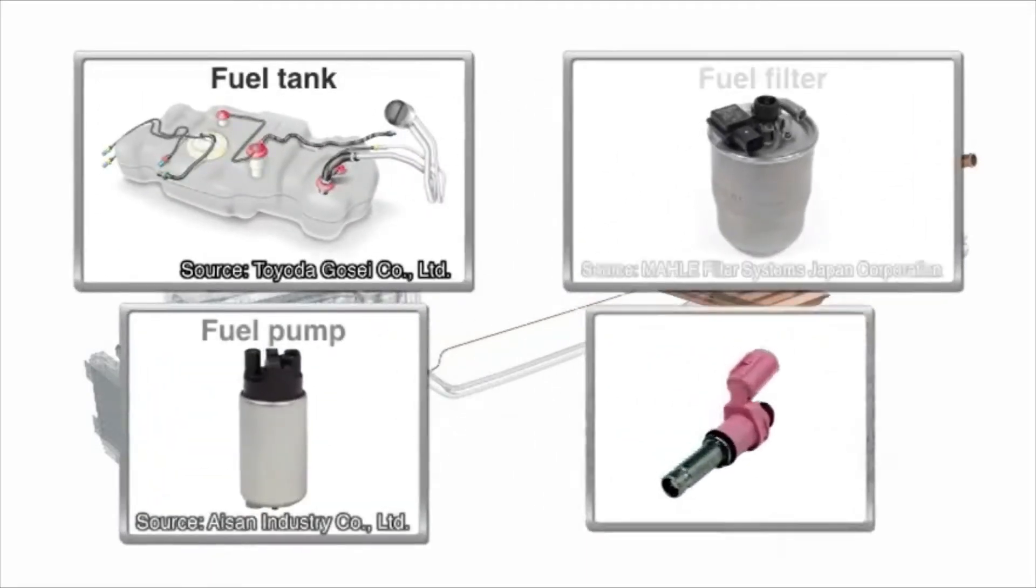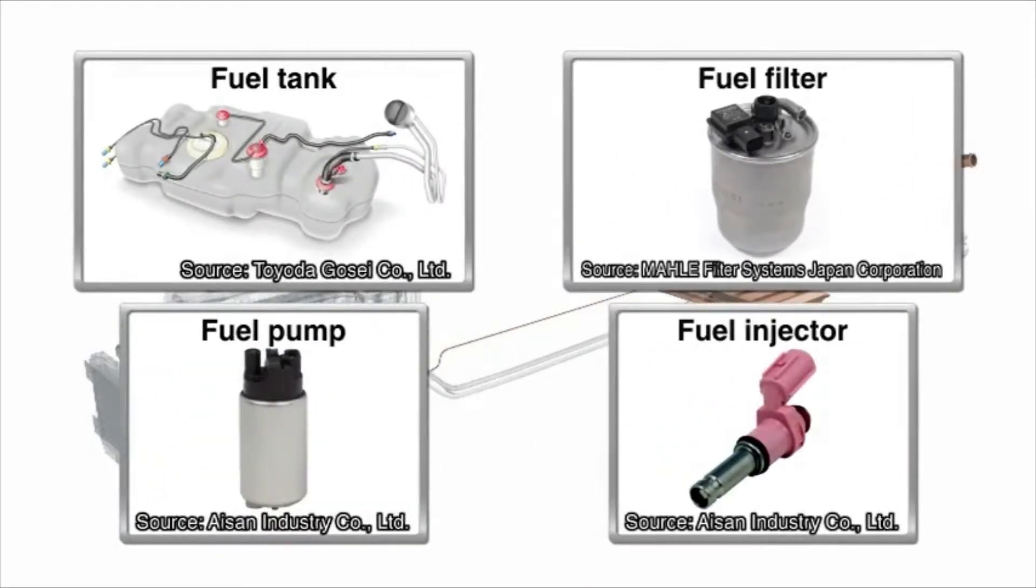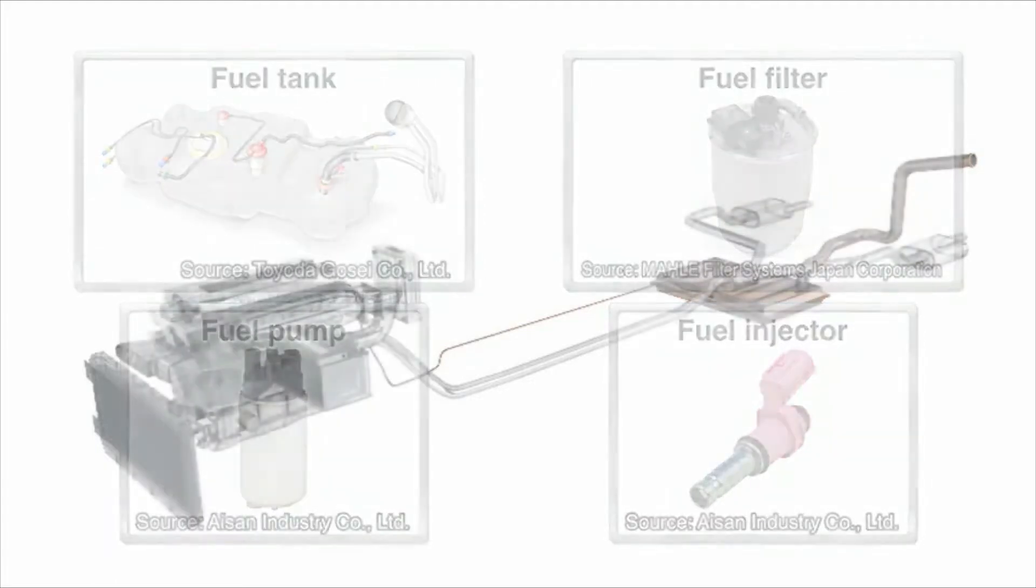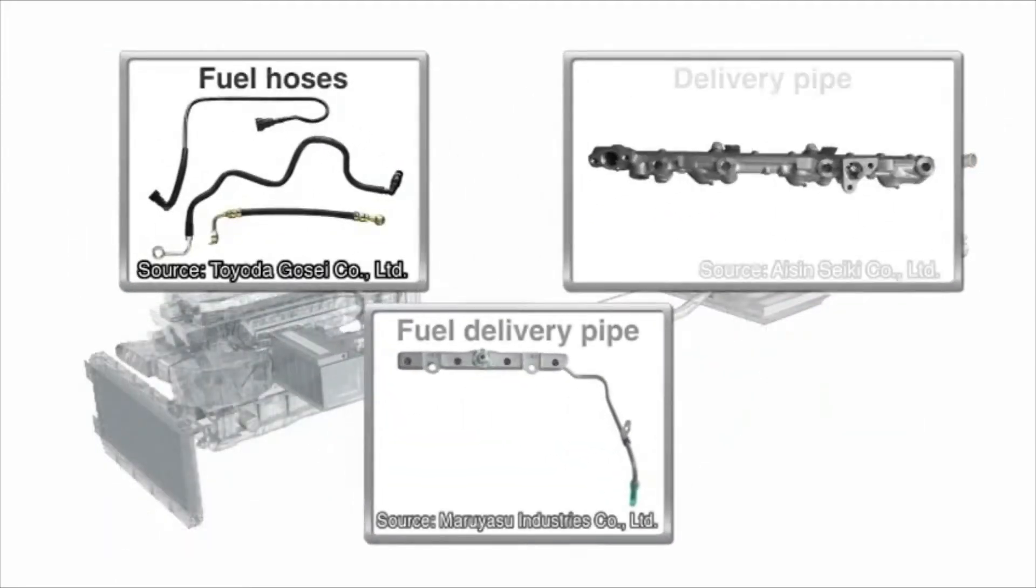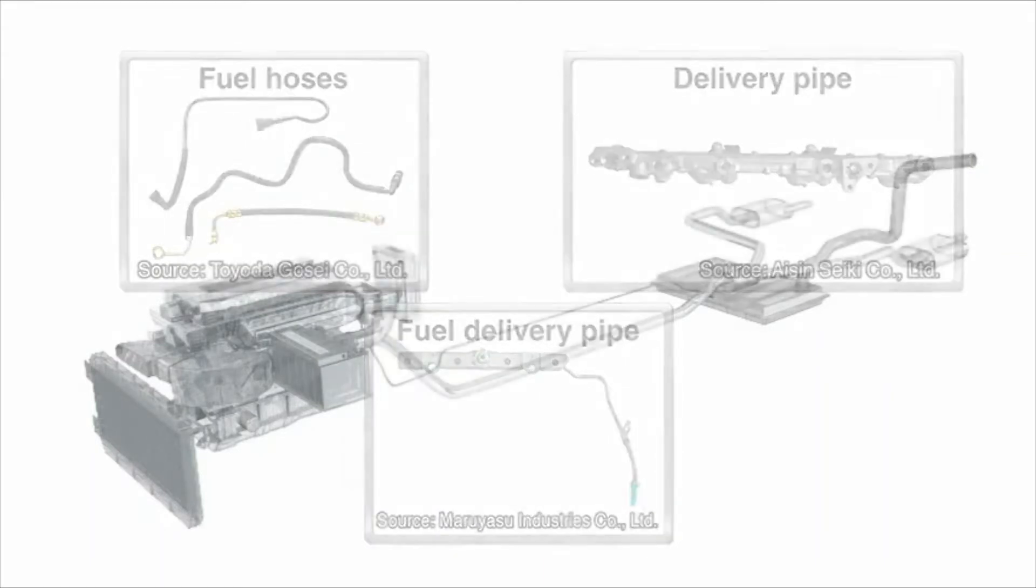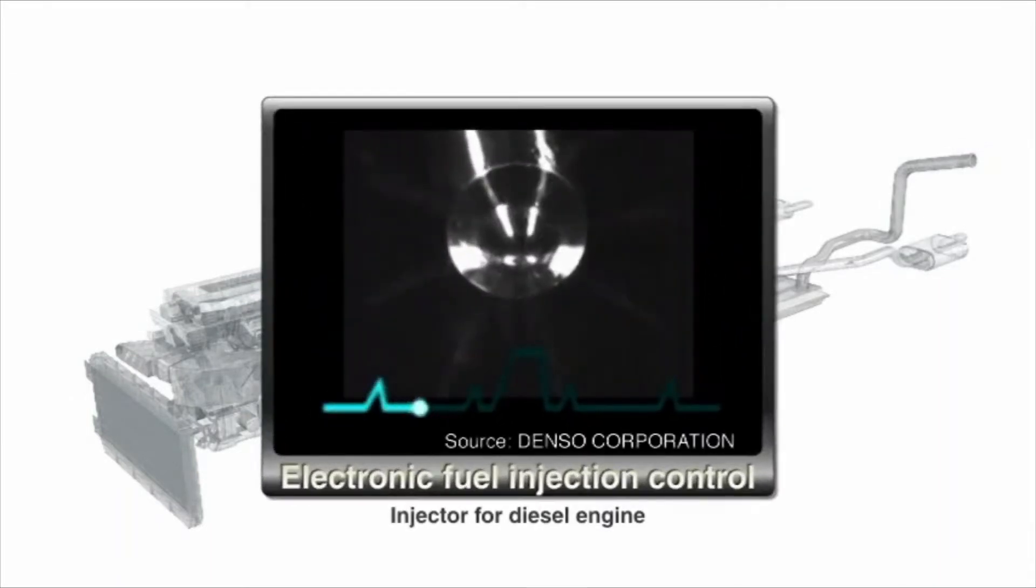The fuel stored in the fuel tank is sent to the injector by the fuel pump. The pump is driven by an electric motor and connected to the injector with the fuel hose and fuel pipe. An onboard computer system electronically controls the fuel injection system.